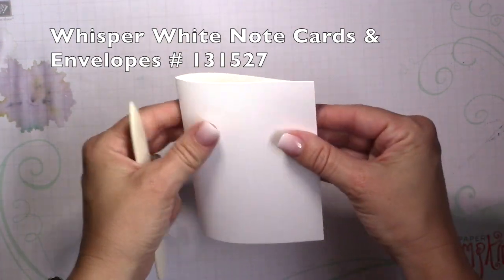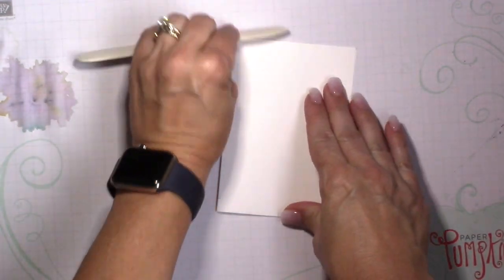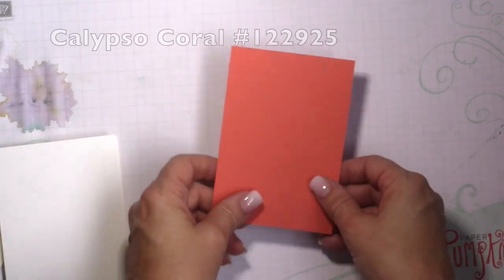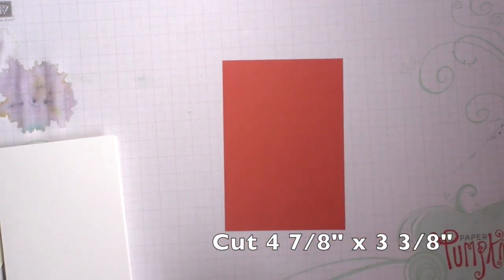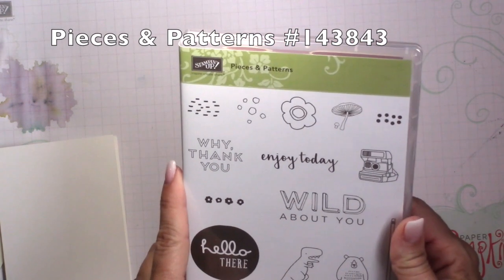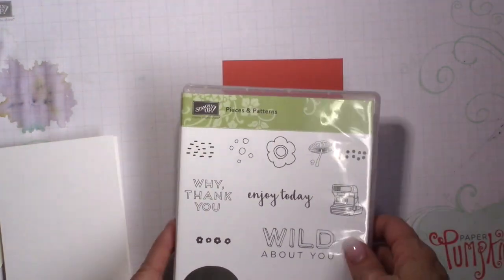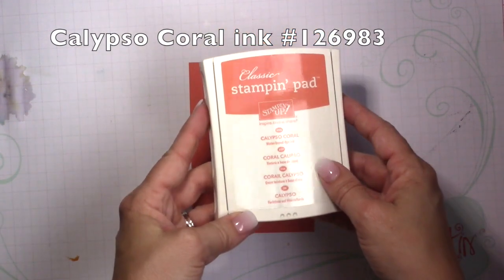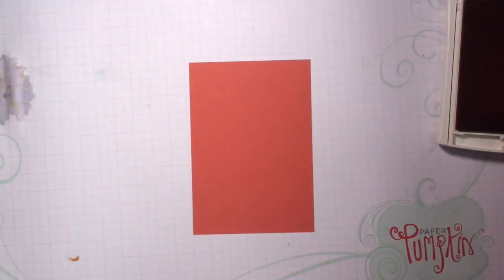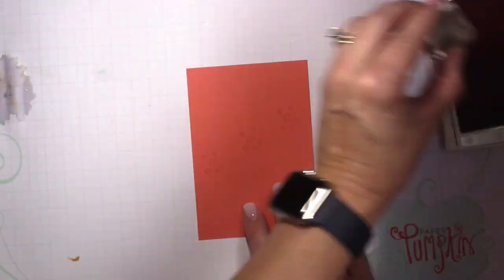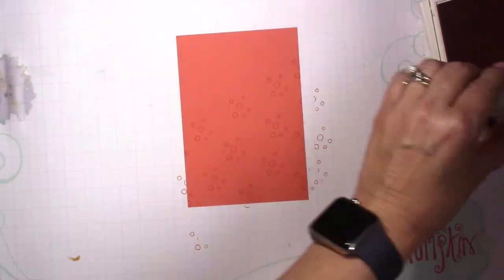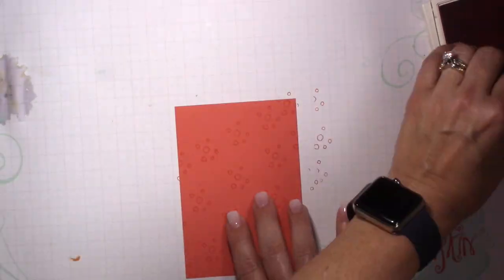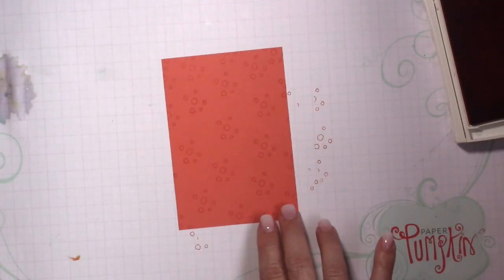So here's the bonus project. I'm going to start off with the Whisper White note card. And I actually saw this on Paper Pumpkin's Instagram page, so I'm somewhat CASEing it—it's a little bit different. I'm starting off with a piece of Calypso Coral and I've cut that down to four and seven-eighths by three and three-eighths. And then I'm using one of the brand new stamp sets that you can start ordering tomorrow. It's called Pieces and Patterns, and I'm going to make my own background with that one stamp using Calypso Coral ink. So it gives it a tone-on-tone pattern.